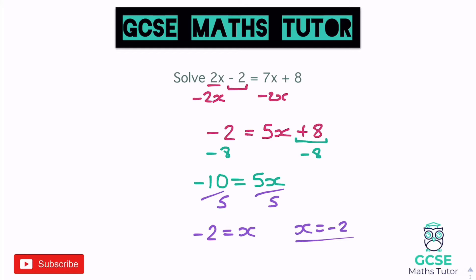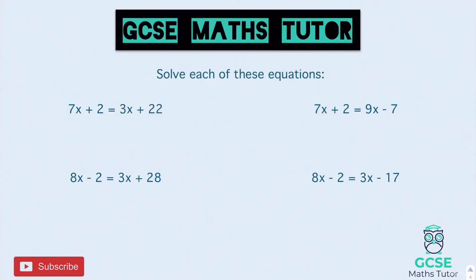So we can have fractions, we can have negative numbers, we can have whole numbers, but ultimately we just need to make sure we get the x's on one side, the numbers on the other, and then solve it just like a normal equation. So here's something for you to have a go at — four questions there, have a go, see what you get, and we'll go over the answers in a sec.